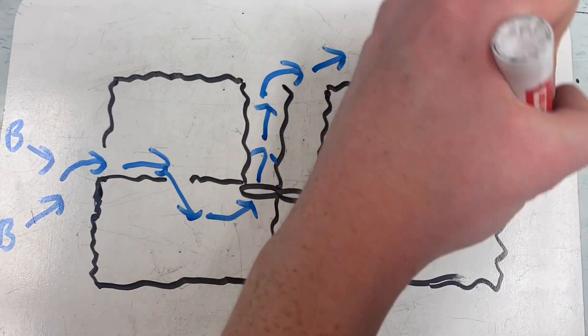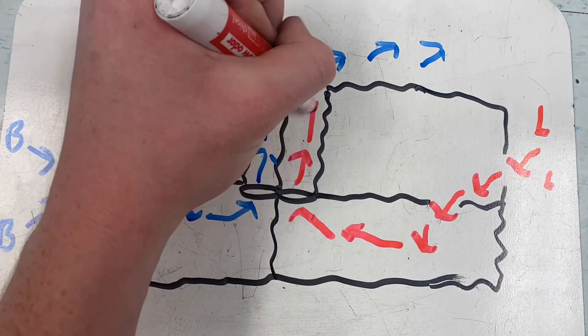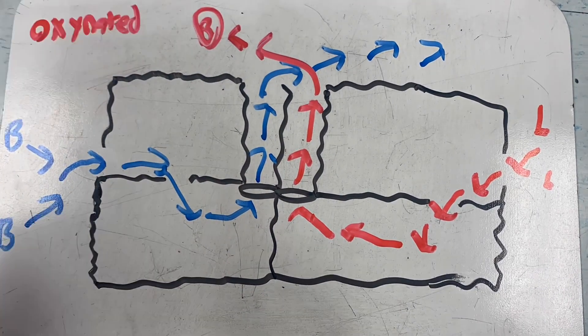and the air from that deoxygenated blood, which is carbon dioxide, goes into the lungs and gets re-oxygenated,